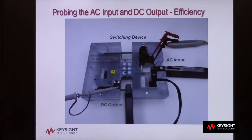The first task in making a power efficiency measurement is to probe the AC input with voltage and current probes as well as probe the DC output with voltage and current probes. You'll typically need a high-voltage differential probe for the AC input, and you can typically use a standard 10 to 1 passive probe for the DC output.